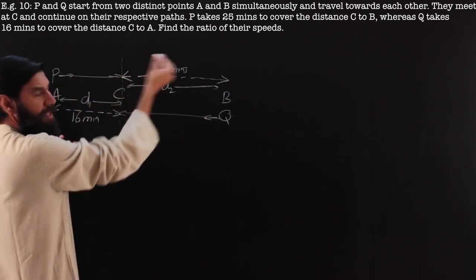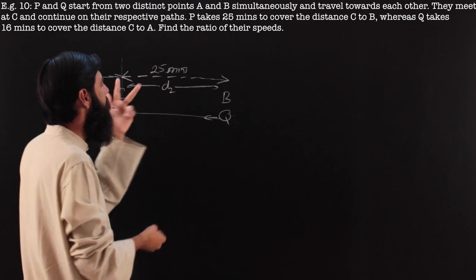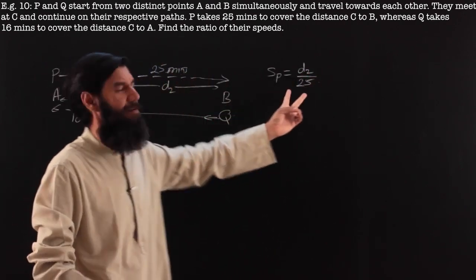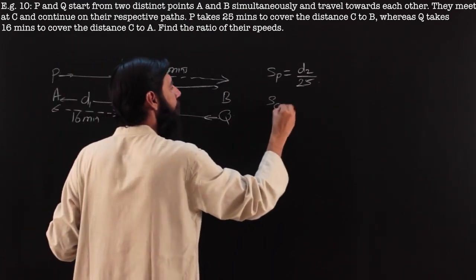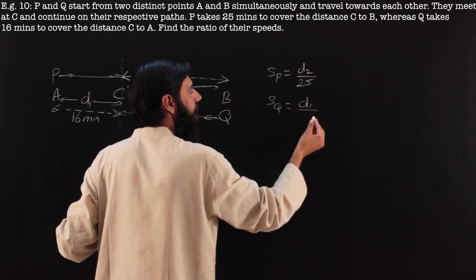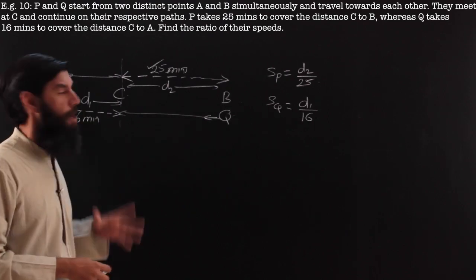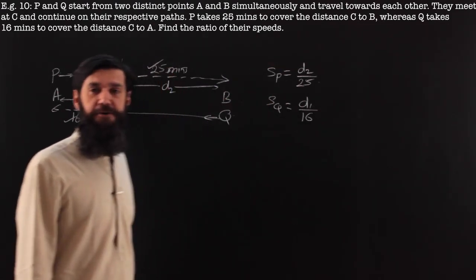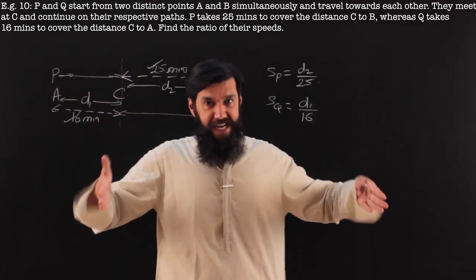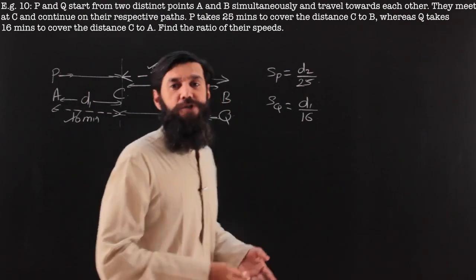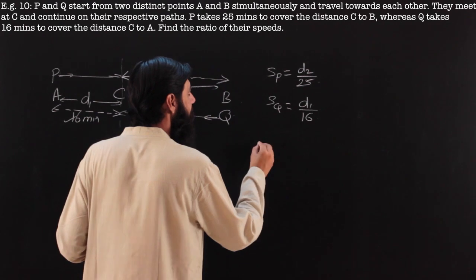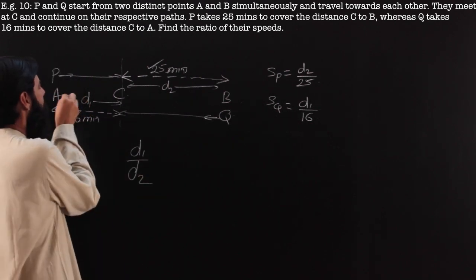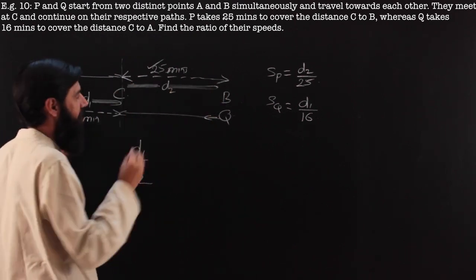Let us call the distance CB as D2 and distance CA as D1. The speed of P is distance D2 divided by time 25 minutes. The speed of Q is distance D1 divided by time 16 minutes. These are directly given data. However, D1 and D2 are unknown, and that is where we need to realize that they began together and met at C. Since they start simultaneously and meet, the ratio of distances covered — D1 to D2 — equals the ratio of their speeds.